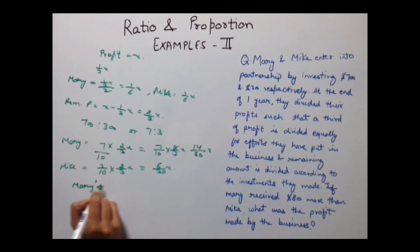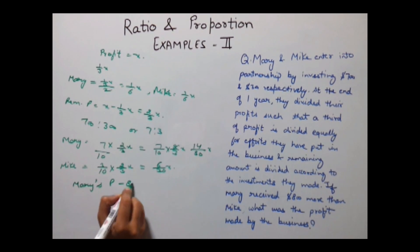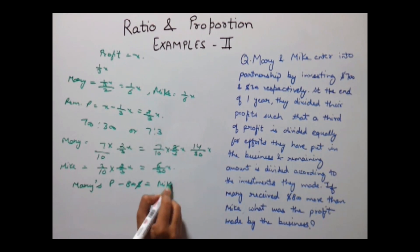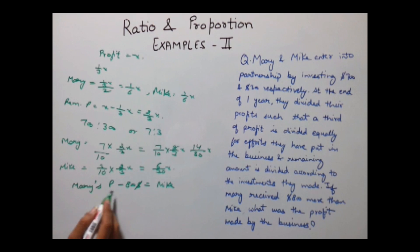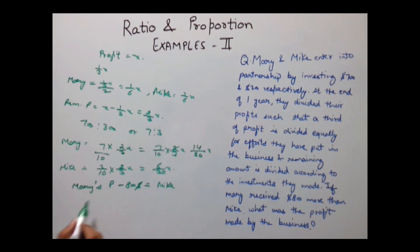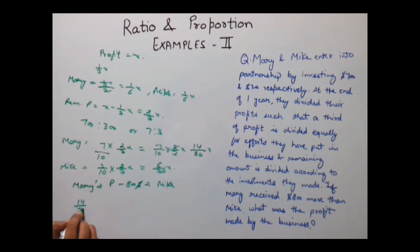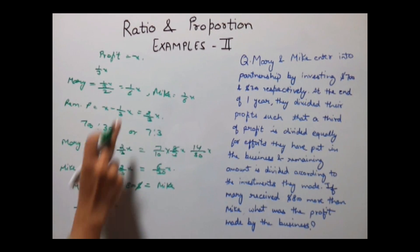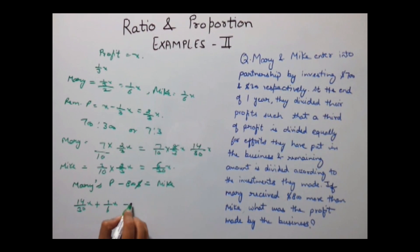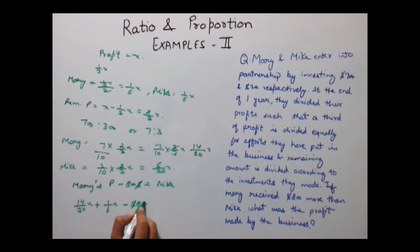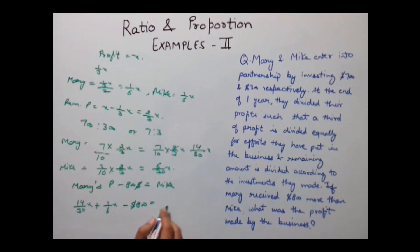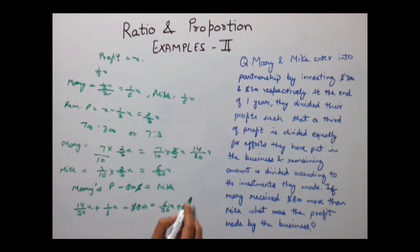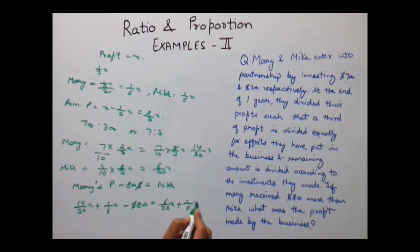Mary's profit would be 14/30 X plus 1/6 X minus 800 equals Mike's profit which is 6/30 X plus 1/6 X.